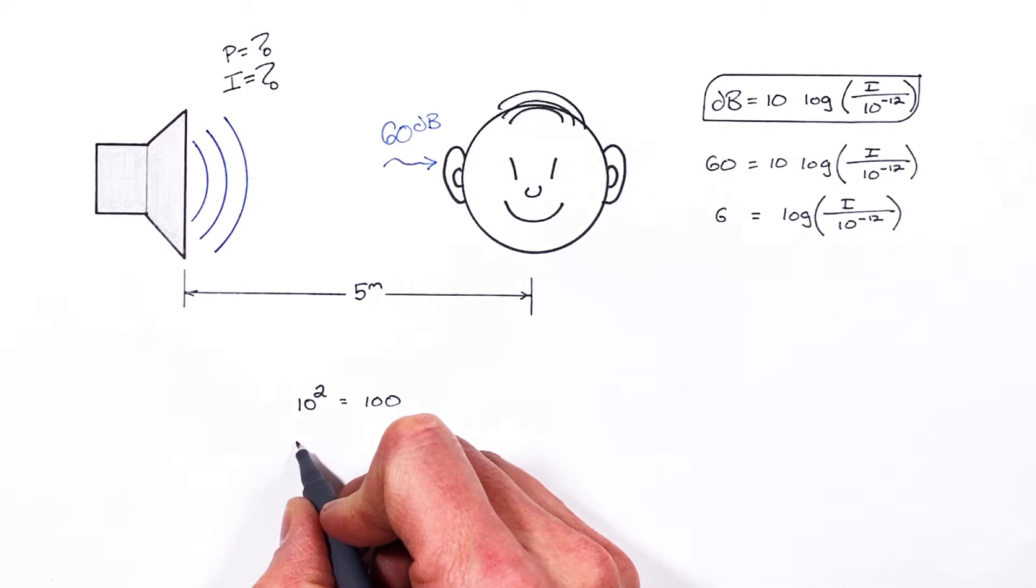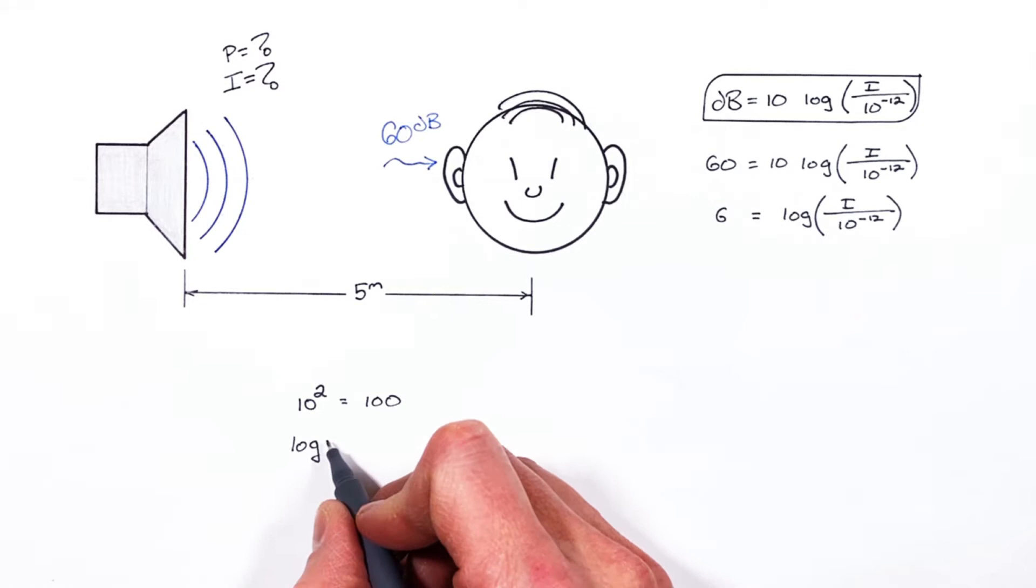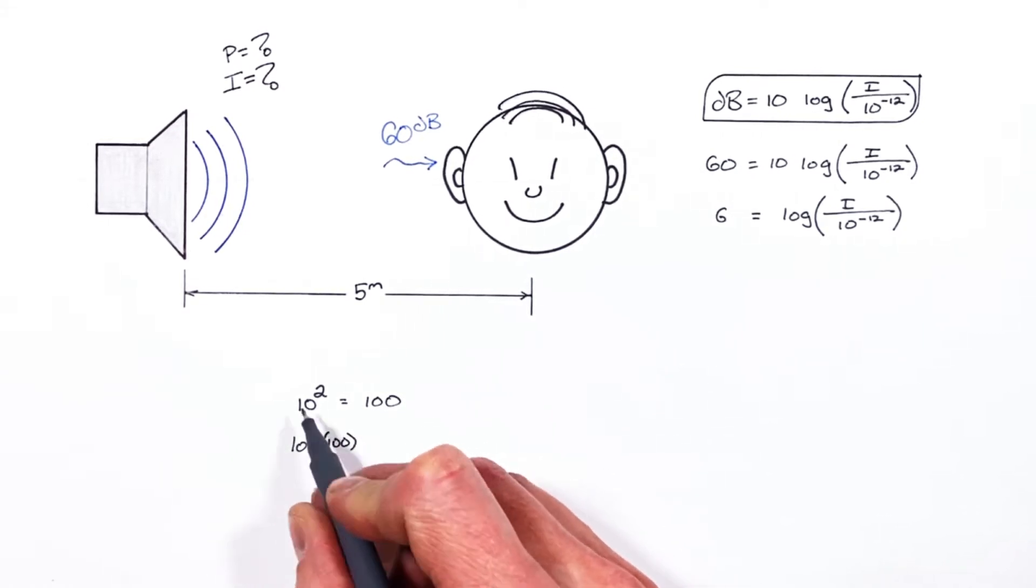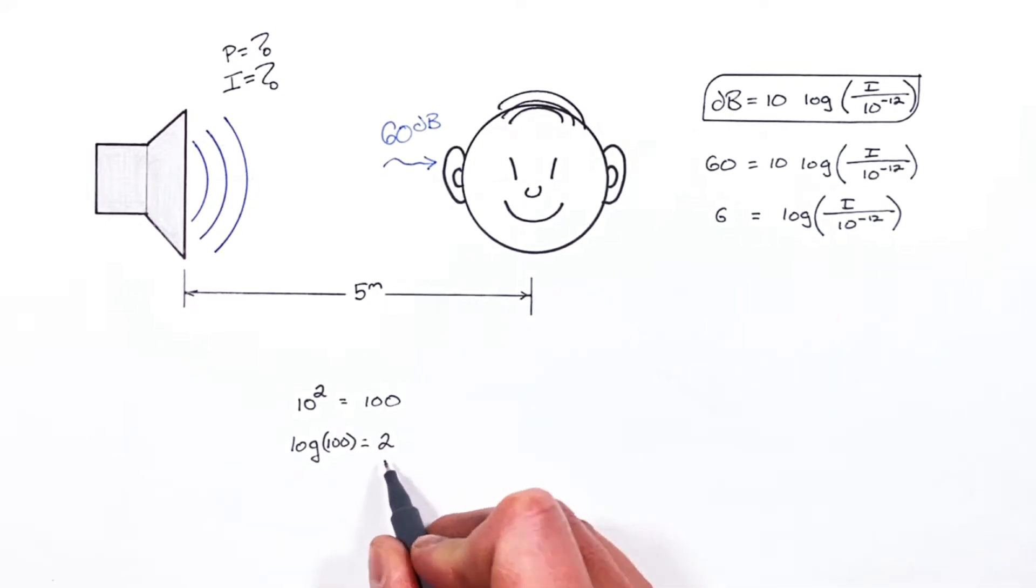And all the log does or the log function is simply tells us what value do we need to put next to 10 or what exponent do we need to put next to 10 in order to yield 100. And that is 2. 10 squared is 100.